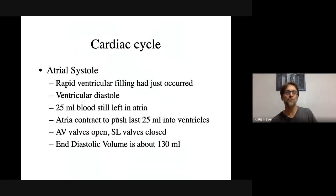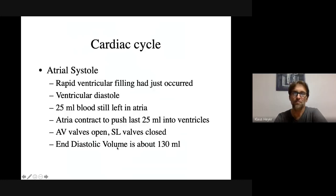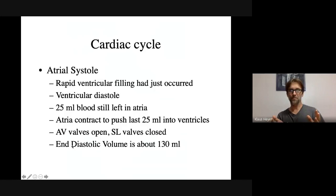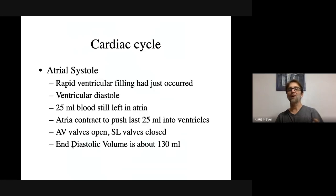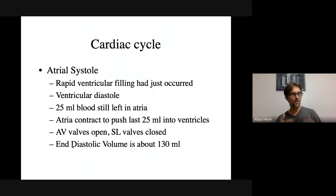How much blood is in the ventricle? That is called end diastolic volume. Diastolic refers to the ventricle being relaxed. How much blood is in that ventricle while it's relaxed? Around 130 milliliters — but it's better to understand what end diastolic volume means: it's how much blood is in the ventricle when it's relaxed and after the atria have contracted.